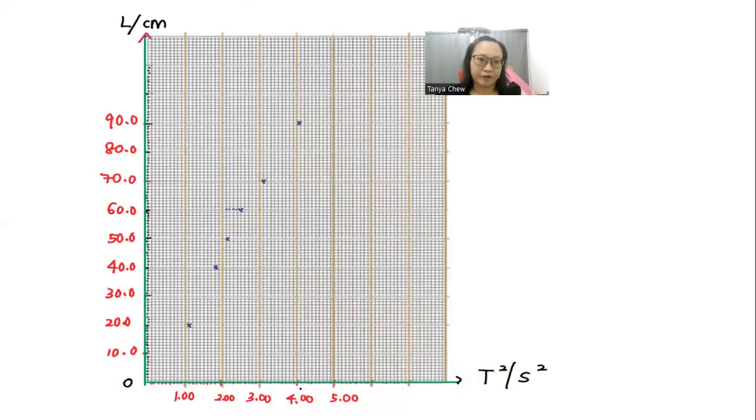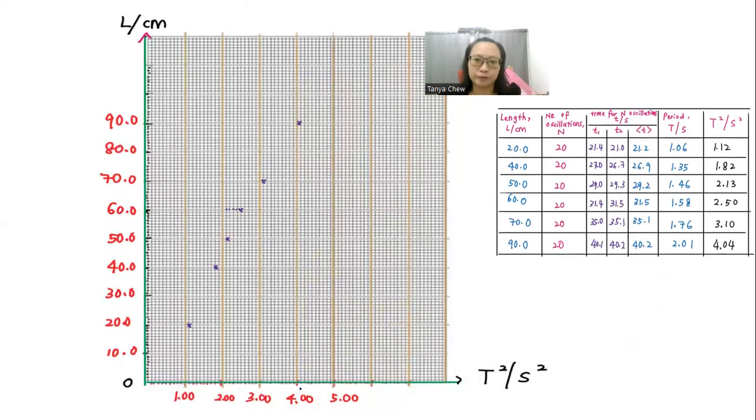This is the plotting of my graph. All the points have been plotted here according to this table. This is my y-axis and this is my x-axis. All the points are plotted quite nice here.